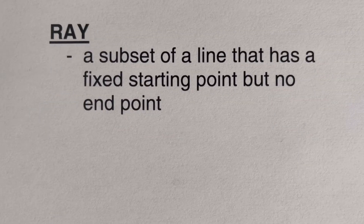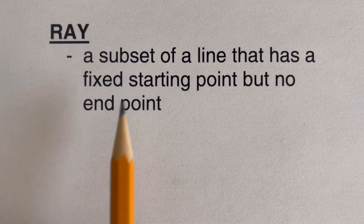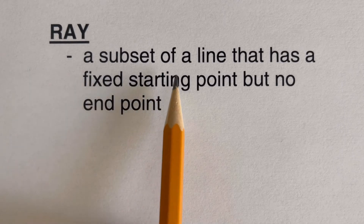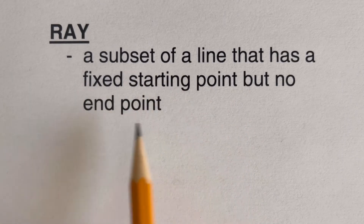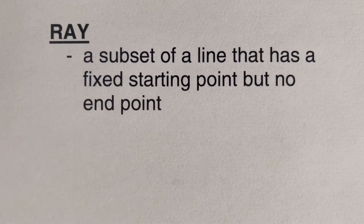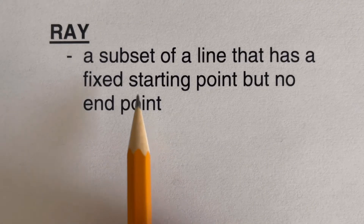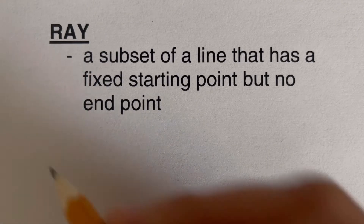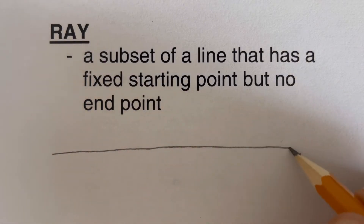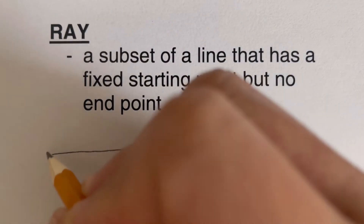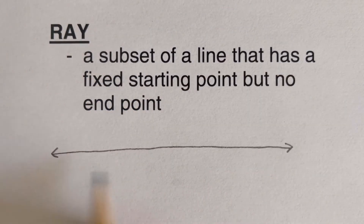Now let's talk about the ray. A ray is a subset of a line that has a fixed starting point but no endpoint. Since a ray is a subset of a line, I'm going to draw the line right here. It extends indefinitely on both ends — the arrowhead is telling us that.